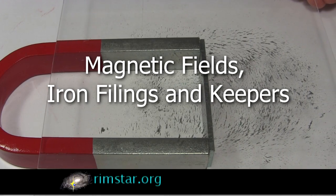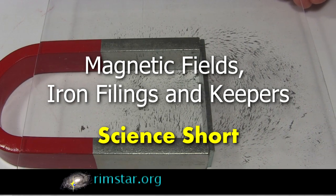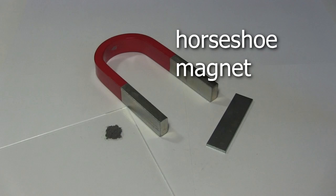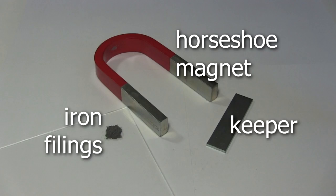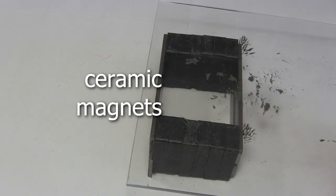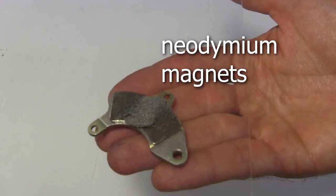Hi folks! Here's a short science video showing you how you can have some fun with magnetic fields using a horseshoe magnet or a U-shaped magnet, a keeper, and some iron filings. We'll also show you some neat stuff using ceramic magnets and neodymium magnets too.